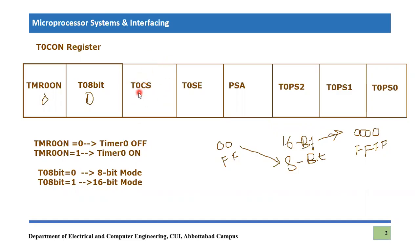The third bit is Timer Zero Clock Source, abbreviated CS. CS means clock source. For Timer Zero, there are two types of clock source available. One can use the built-in clock provided through the clock oscillator of the device itself — that is, PIC18F452 uses a crystal oscillator XTAL connected to it.